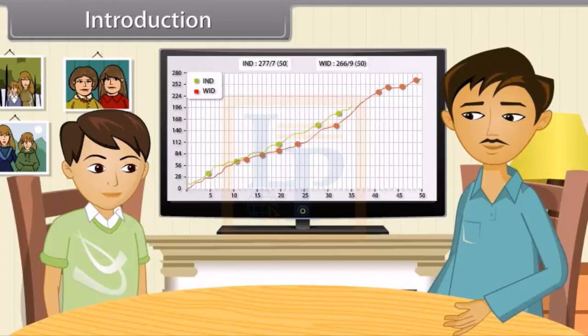Look at the run rate graph. India is heading West Indies. What is this graph showing? I cannot understand.